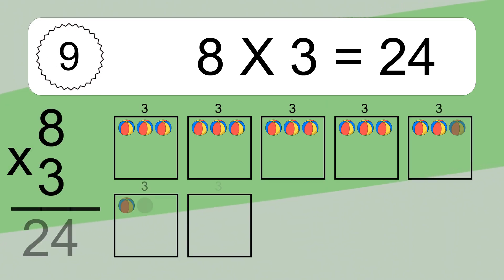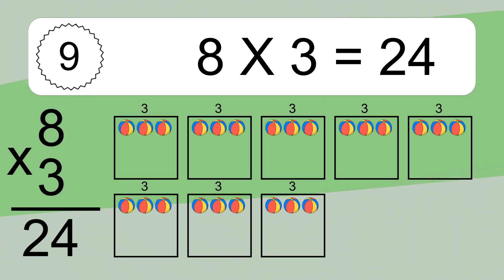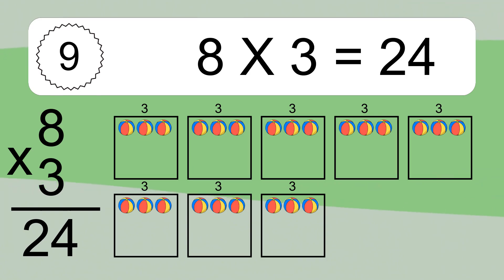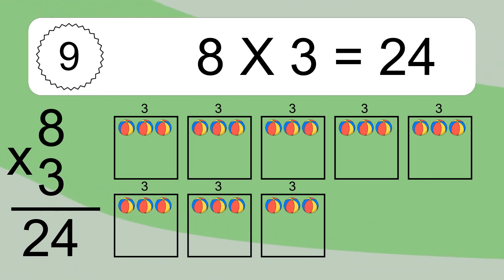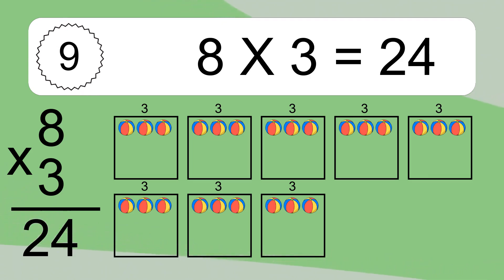8 times 3 equals what? 8 times 3 equals 24. We have 8 boxes, and each box has 3 colorful balls inside. If you count all the balls in all the boxes together, you will have 8 times 3 balls. This equals 24 balls.